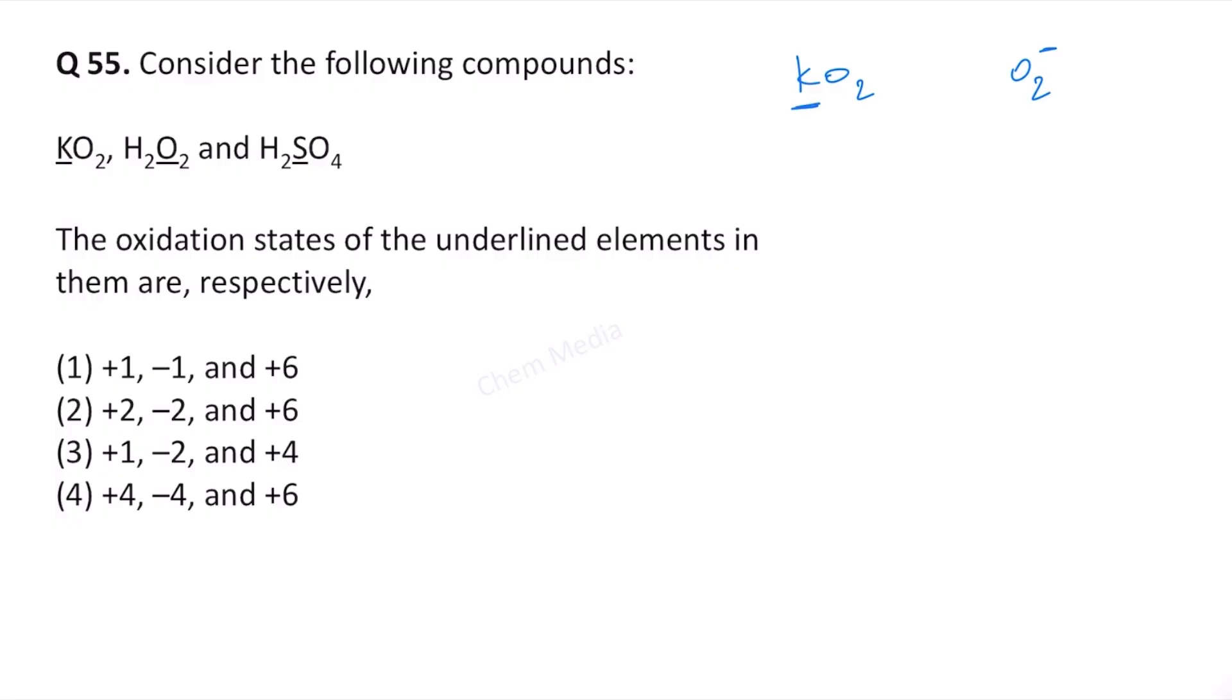Typically oxygen has an oxidation state of minus 2, but that is not applicable here. Even for H₂O₂, hydrogen peroxide, it is not applicable. Potassium belongs to group 1. Group 1 elements always have an oxidation state of plus 1 because once they lose one electron, they attain the noble gas configuration. Therefore it is plus 1.